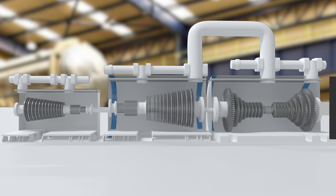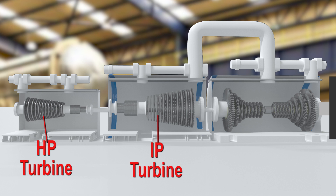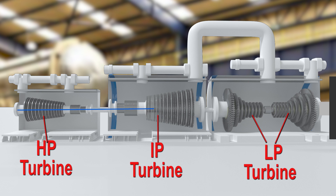In the turbine hull we can see various turbines of different sizes. This is the high pressure turbine, also called the HP turbine. Next is the IP turbine, which is the intermediate pressure turbine, and third is the LP turbine, which is the low pressure turbine. All three turbines are mounted on the same shaft.